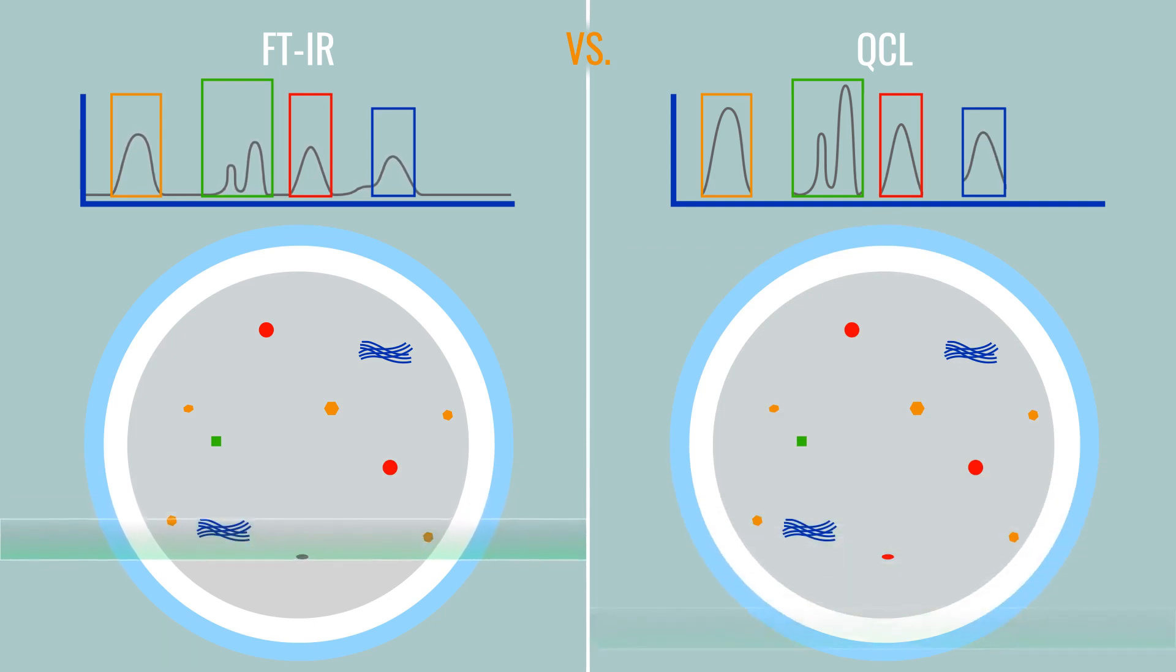A true powerhouse. Remember though, that QCL only looks at a very small and specific part of the infrared spectrum, and thus the speed advantage quickly fades as we need to acquire more spectral information.